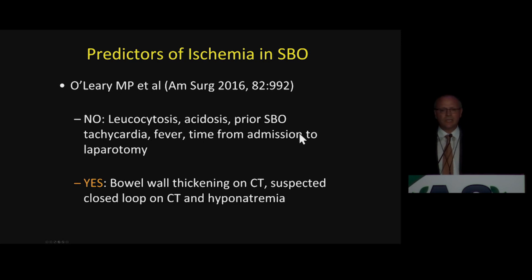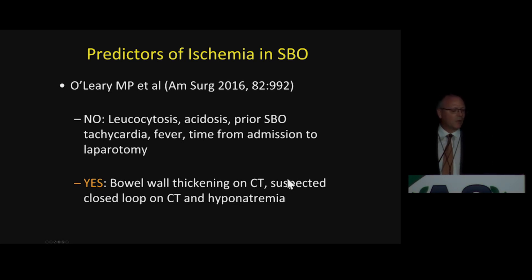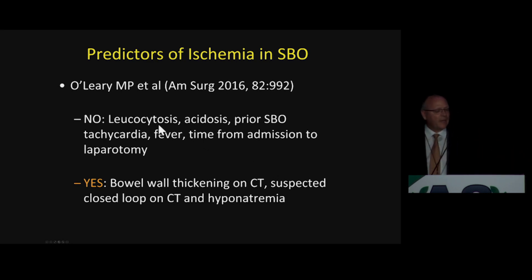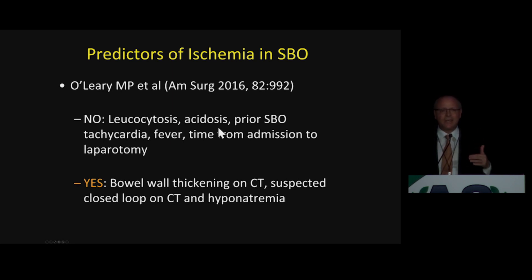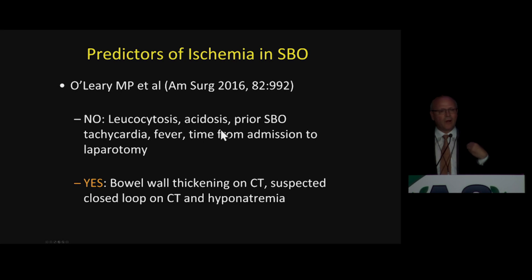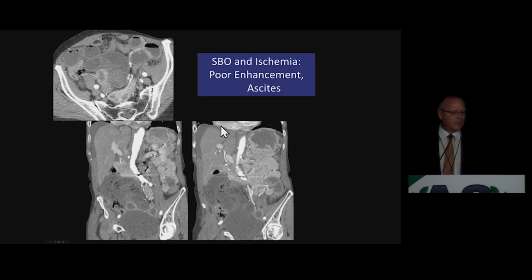How good is CT for determining ischemia? It's actually very good, as shown in this study in the surgical literature. The two most important CT signs — bowel wall thickening and suspected closed-loop — are positively correlated with proven ischemia at surgery, whereas clinical and lab results such as leukocytosis, acidosis, and everything we've heard about are not good predictors of ischemia on surgery. CT is really the best tool that our surgeons have to identify ischemia, which means that we as radiologists are the best friends who can help them determine who needs to go to the OR.